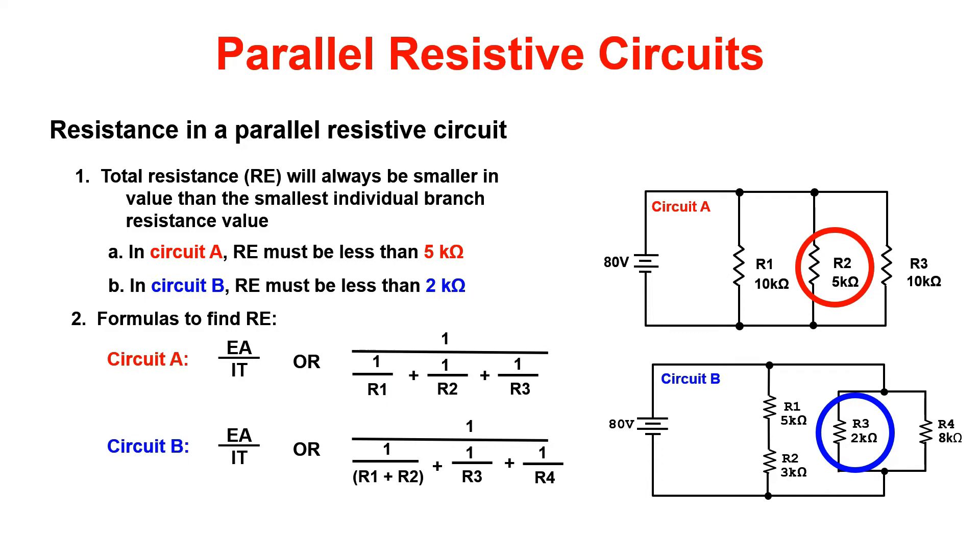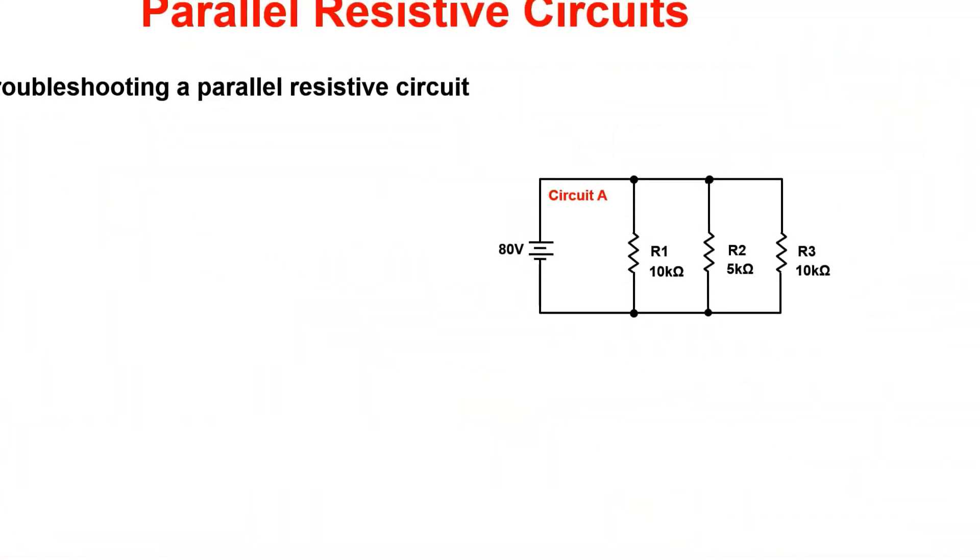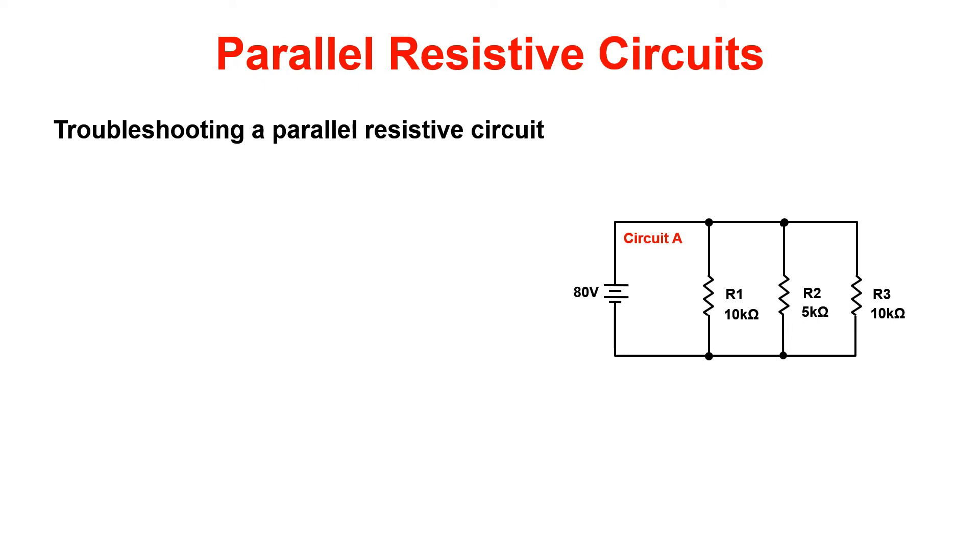Troubleshooting can always be challenging, but if you follow this guide, it'll be super easy. When we discussed opens in class, we said that they would be identified as a component being removed from the circuit. When troubleshooting an open in a parallel circuit, three things will happen: current will decrease, resistance equivalent or RE will increase, and all branches will measure applied voltage.